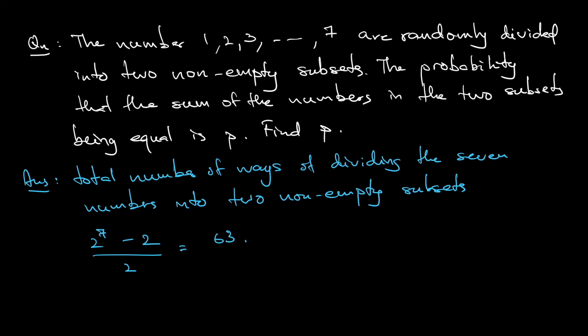So 63 will be my denominator. Next, the sum of each subset must be the same. The sum of 1 all the way until 7 is 7 times 8 divided by 2, which is 28. That means the sum in each subset would equal 14.